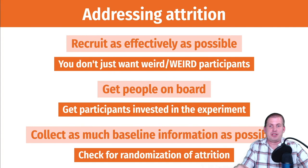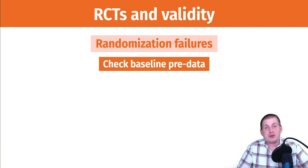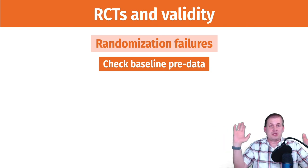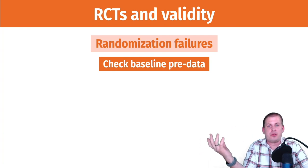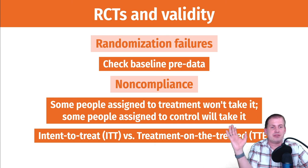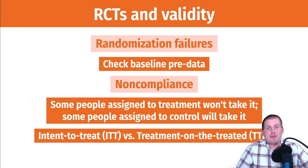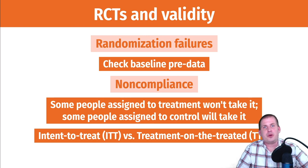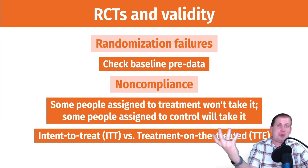You can also have randomization failures — the same idea as checking baseline characteristics. Make sure that treatment and control groups have roughly the same composition across confounders and demographic variables. There are also issues with non-compliance: some people assigned to treatment won't take it but stay in the study; some assigned to control will actively seek out the treatment. This is harder to detect in medical trials — if you're testing a new form of Tylenol and people have a sugar pill, you won't see non-compliance.